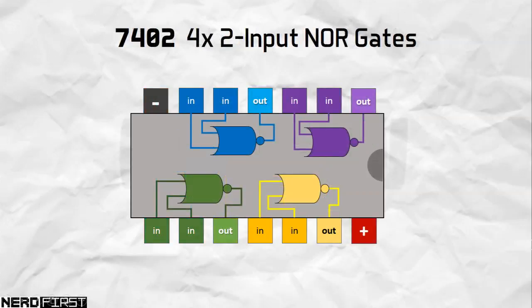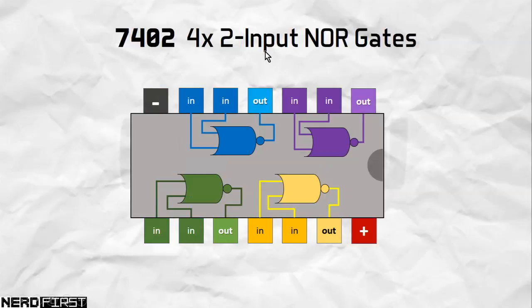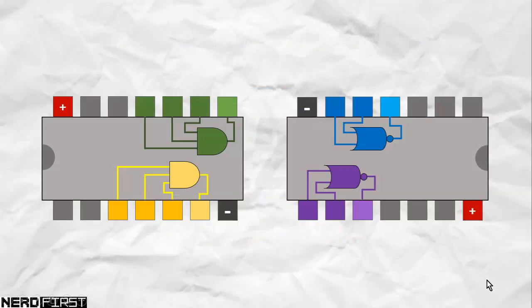Same deal for the NOR gates. Now these are two input NOR gates, so there are four of them within this package. Again, we will only be using two of them. So we will be laying out the two IC chips like this.